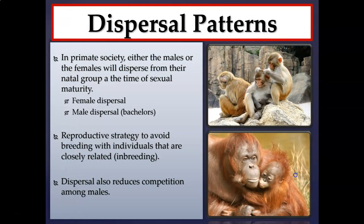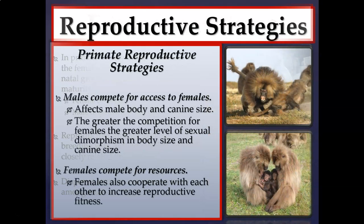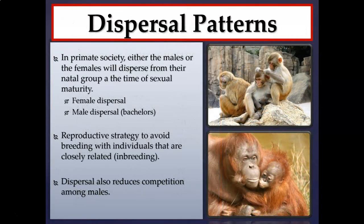Dispersal patterns describe how primates migrate once they reach reproductive maturity. In primate society, either the males or the females will disperse from their natal group — the group they were born into — at the time of sexual maturity. Female dispersal means that once females hit sexual maturity, they migrate or disperse to another group that is not their natal group.